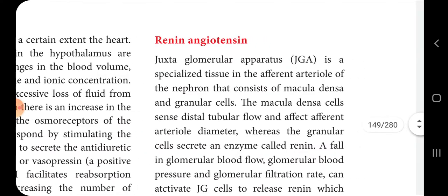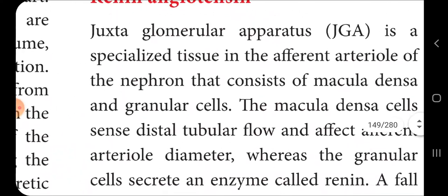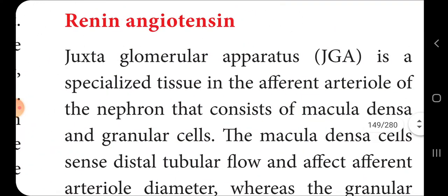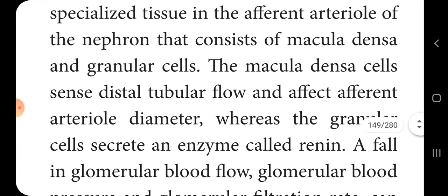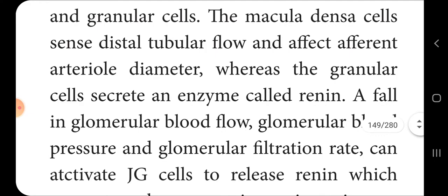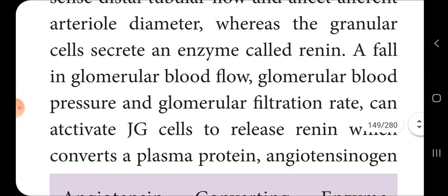The next mechanism is the renin-angiotensin mechanism. The juxtaglomerular apparatus is a specialized tissue in the afferent arteriole of the nephron that consists of the macula densa and granular cells. The macula densa cells sense distal tubular flow and affect afferent arteriole diameter, whereas the granular cells secrete the enzyme called renin.